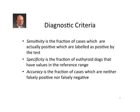Hypothyroidism is a multi-systemic disorder, and in almost every case you'll want to do a complete minimum medical workup including a complete blood count, a biochemical screening panel, and a urinalysis. This allows you to pick up on manifestations of the disease and to rule out other conditions similar in presentation, such as Cushing's disease. Regarding statistics: sensitivity is the fraction of cases which are actually positive that are labeled positive by the test. Specificity is the fraction of euthyroid dogs that have values in the reference range. Accuracy is the fraction of cases that are neither falsely positive nor falsely negative.